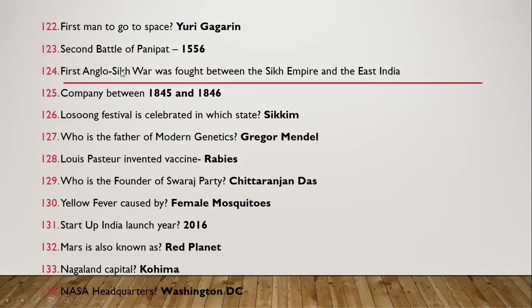Question 123: First Anglo-Sikh War was fought between the Sikh Empire and the East India Company. It was held in 1845 and 1846.